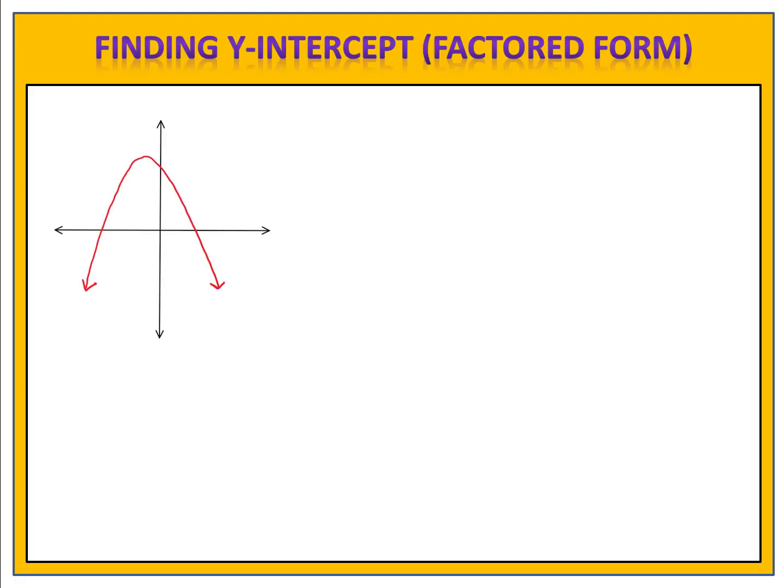Remember what a y-intercept is. A y-intercept is the place where a function passes through the y-axis. The coordinates of that point are always (0, y), meaning x is always 0.